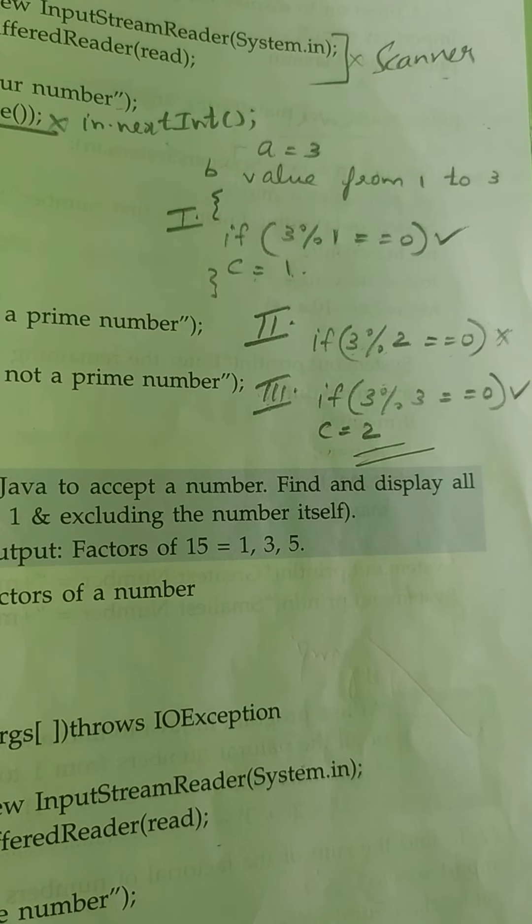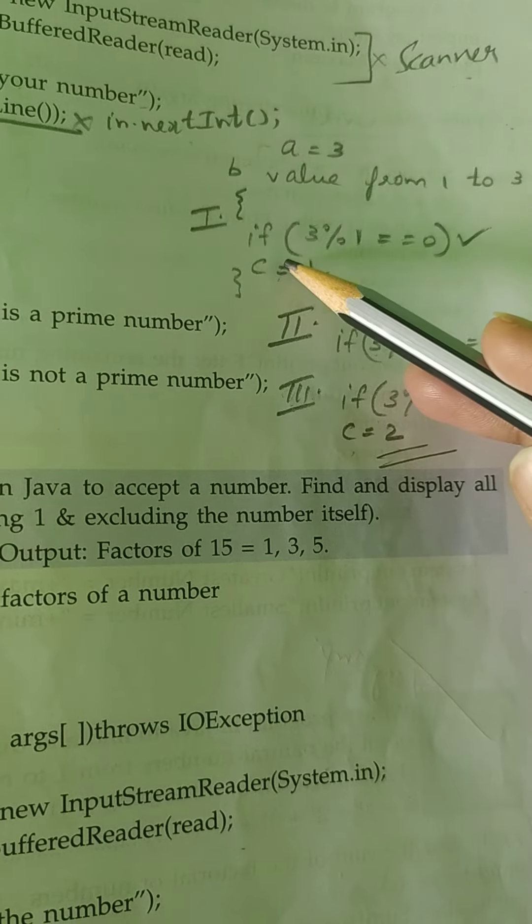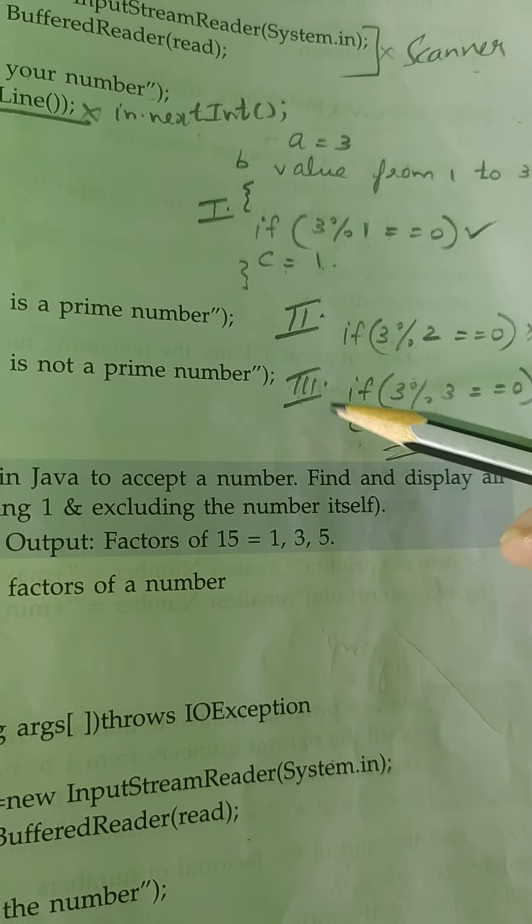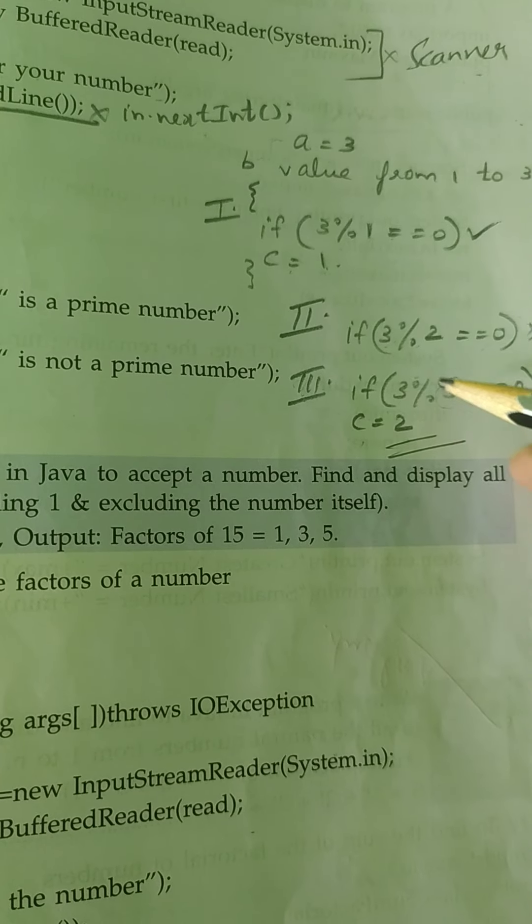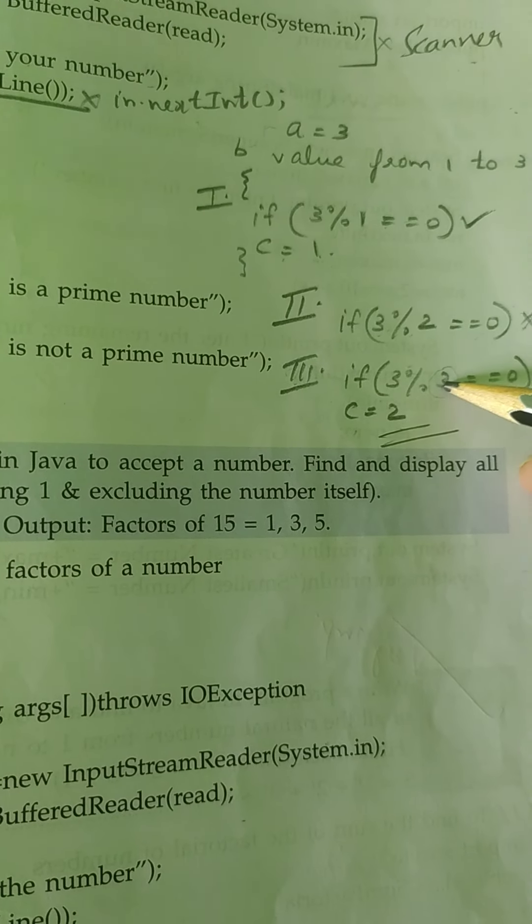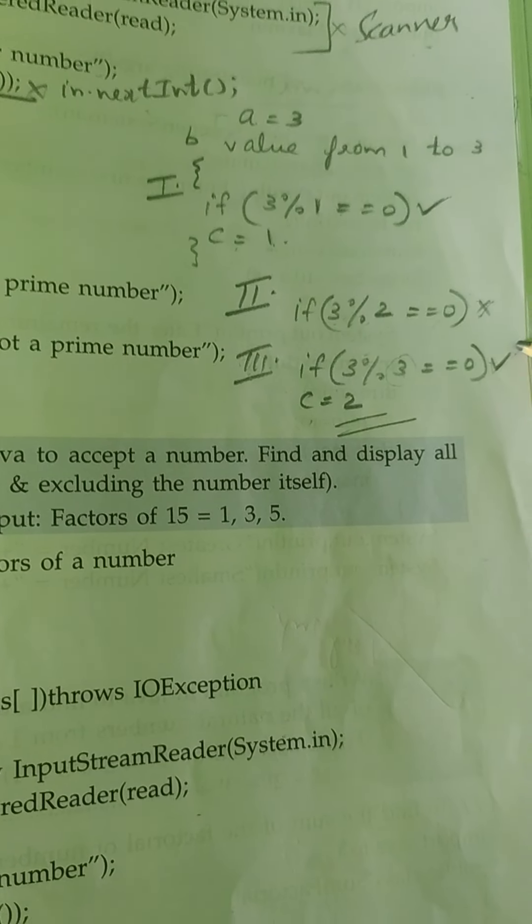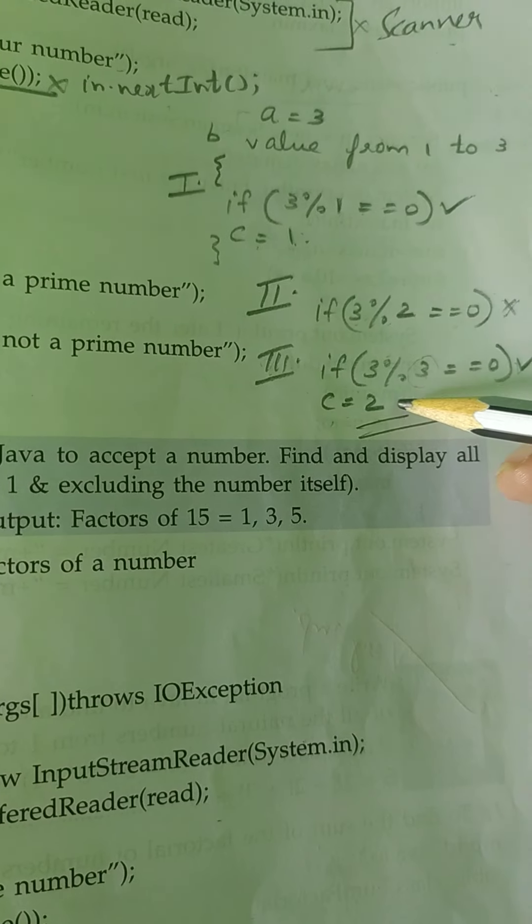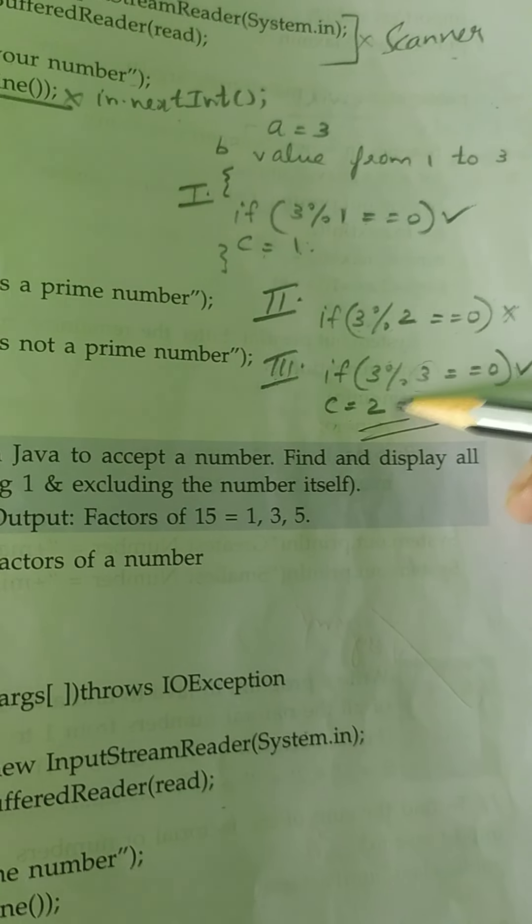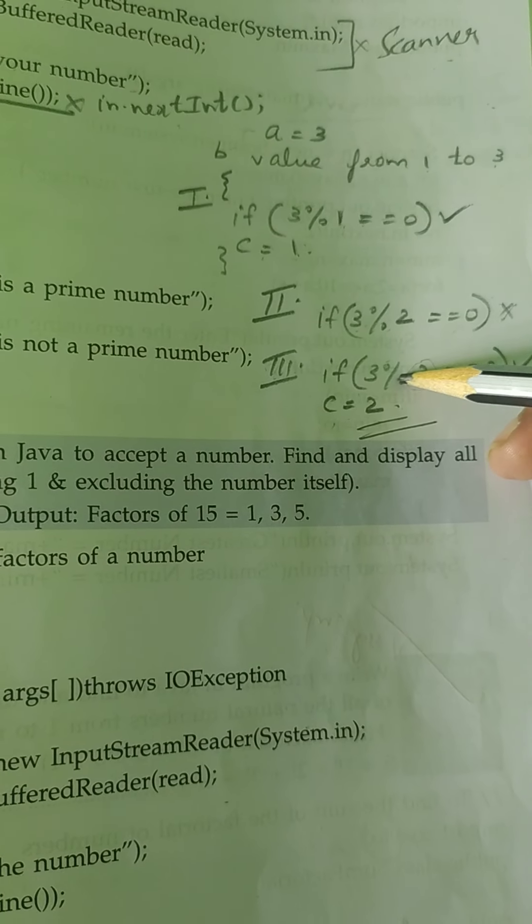This condition is false, so I'm not going to increment the counter variable. Third loop, I'm incrementing the B value again. B value becomes three. Three modulus three - condition is true. Then you need to increment the counter variable from one to two.